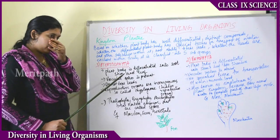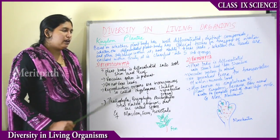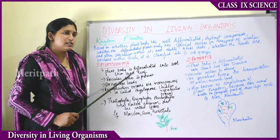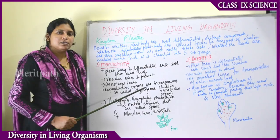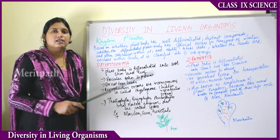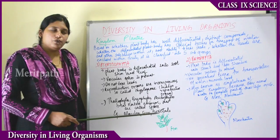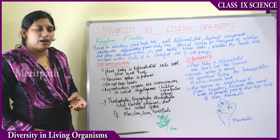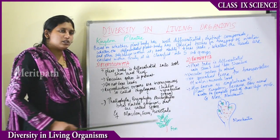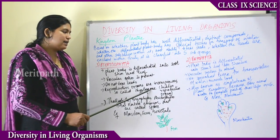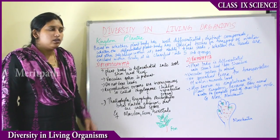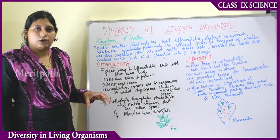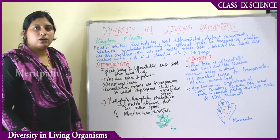The next subgroup is Pteridophyta. In Pteridophyta, the plant is well differentiated into roots, stems, and leaves. The vascular system is present — there is specialised tissue for transportation of food and water. They do not bear any seeds. The reproductive organs are inconspicuous, so they are called cryptogams, meaning plants with hidden reproductive organs.